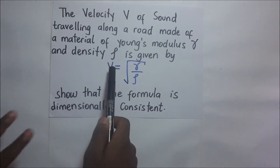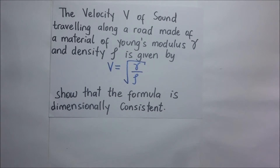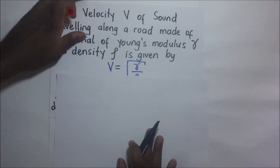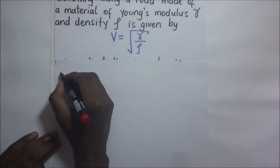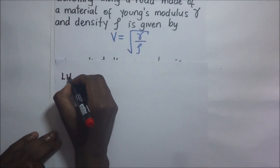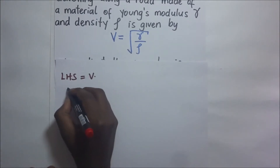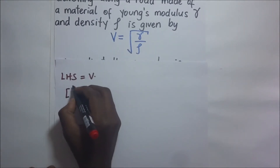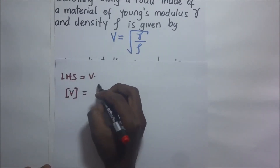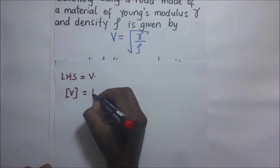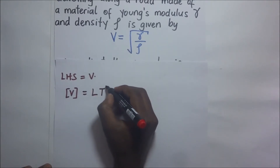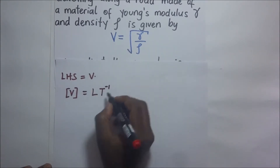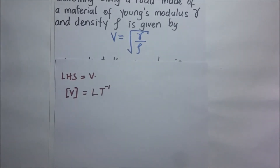So now for the left hand side, we have V, and the dimensions of V are L T to the power negative one. These are the dimensions of V.